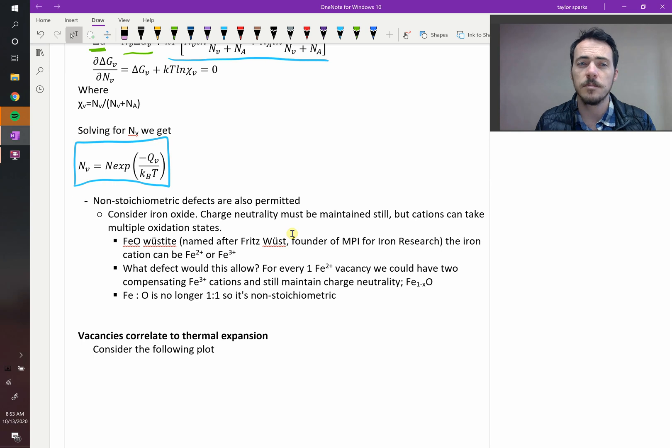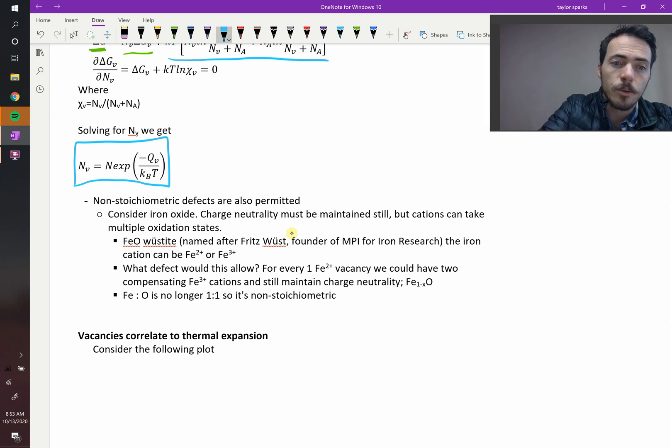However, if you've got cations that can take multiple oxidation states, we've seen this in previous homework problems, that you can end up with non-stoichiometric compounds. A good example is iron oxide, Wüstite, named after Fritz Wüst, founder of the Max Planck Institute in Germany for iron research anyways. Now, in that compound, iron can be both iron 2+, and it can be iron 3+. So what sort of defect should this allow?